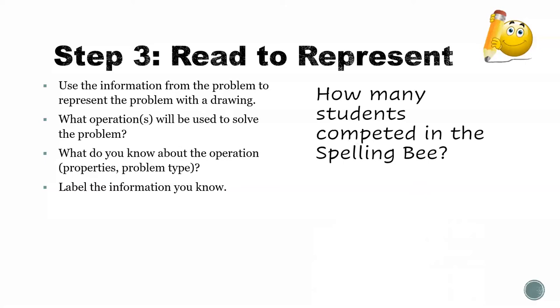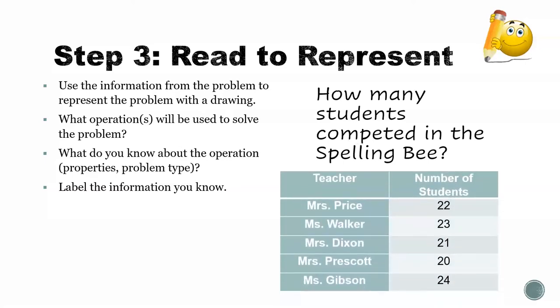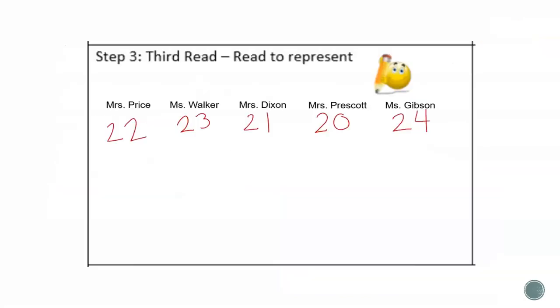Let's read our third time: how many students competed in the spelling bee? So from reading the problem a third time, we have to decide how we want to represent this problem to make it easy for us to solve it. So one thing that I think will be helpful is if we decompose all of our numbers into tens and ones. So twenty-two is twenty and two. Twenty-three is twenty and three.